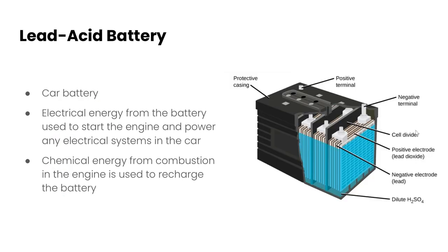The first example is the lead acid battery. So this is your typical car battery and what happens here is electrical energy from the battery is used to start the engine and power any electrical systems in the car and then chemical energy from combustion in the engine is used to recharge the battery. So you're getting both the discharge and the charging reactions happening within this type of secondary cell.